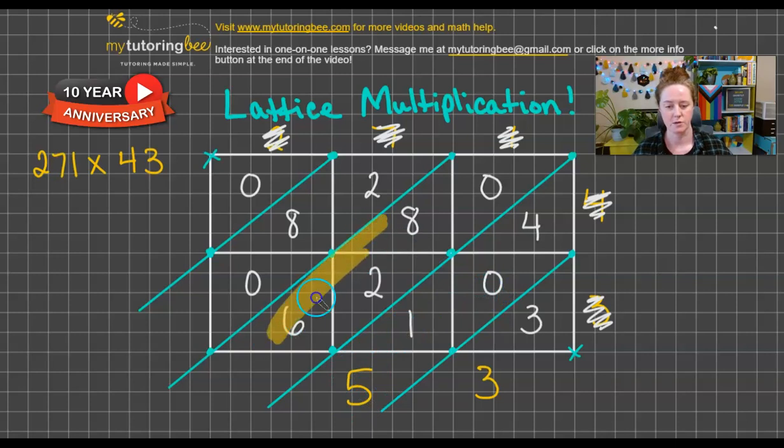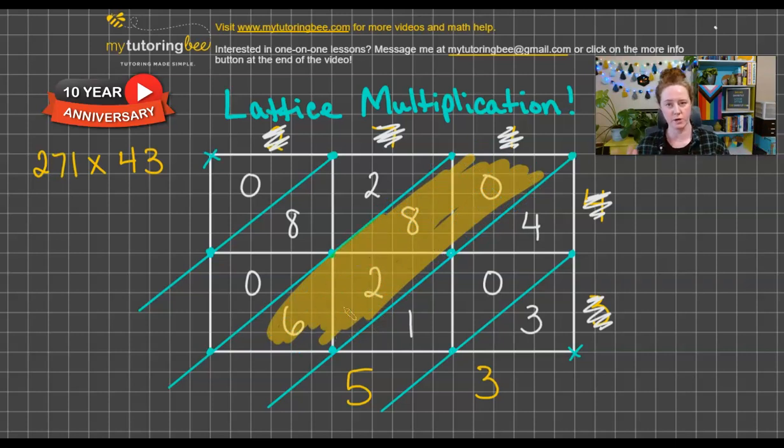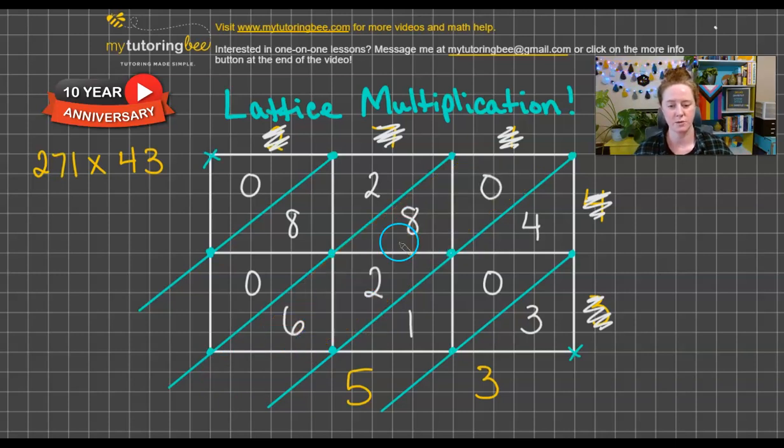Now we're going to go to this section. We're just, like we do when we're adding normally, we're starting from the right and working our way left and adding up all those numbers. We're just kind of looking at it diagonally here. Some of my students call this sliding down the mountain. So you're just going to slide down and count up all of those numbers and then put the sum here. With this, we've got zero plus eight plus two plus six. Eight plus two is 10 and then six is 16.